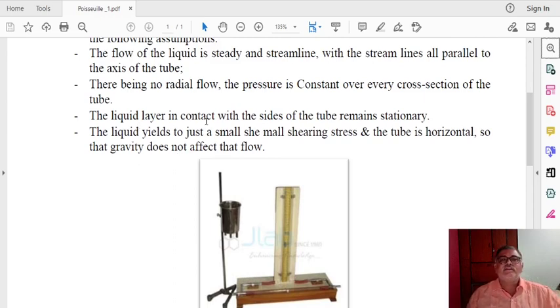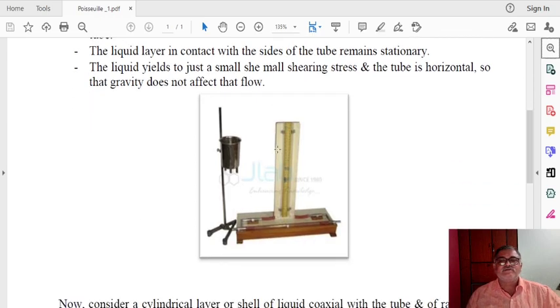The liquid layer in contact with the sides of the tube remains stationary - this is an important aspect concerning viscosity. The layers in contact with the tube should remain stationary. The liquid yields to just a small shearing stress and the tube is horizontal so that gravity does not affect that flow.